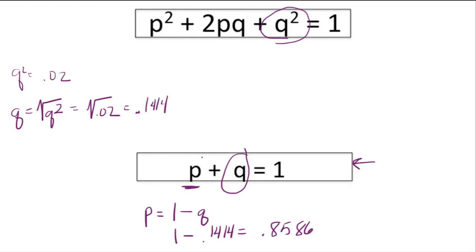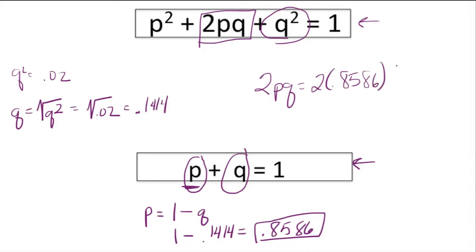Now we know both the values of q and p, and therefore we can solve anything in this equation. The question asked us how many individuals are carriers, which would be asking for 2pq. So 2 times p times q is just 2 times 0.8586 times 0.1414, which equals 0.2428. That would be the proportion of the population that are carriers.